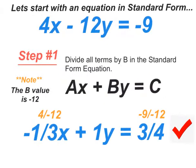Now that you have the rule, here's another example. Let's start with this equation in standard form. 4x minus 12y is equal to negative 9. So first step, take the b-value, this time it's negative 12. Divide all three terms by negative 12.